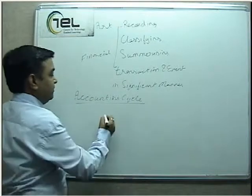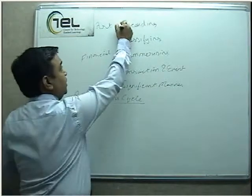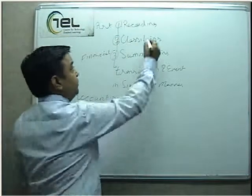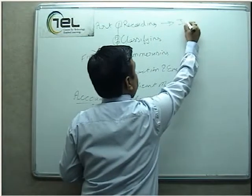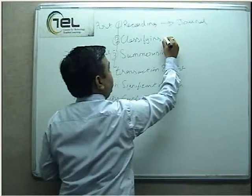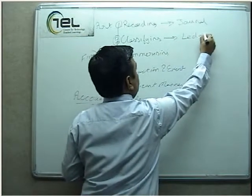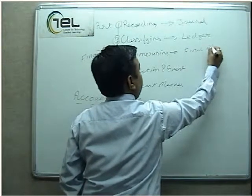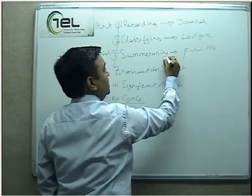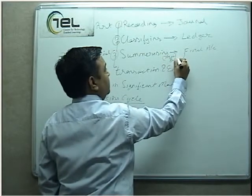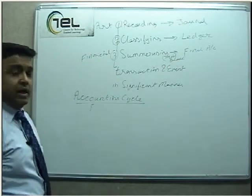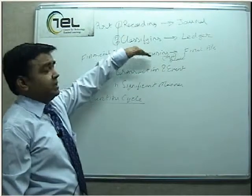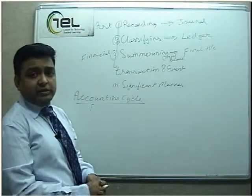The Accounting Cycle basically comes with three steps. The first one is Recording, the second is Classifying, and the third one is Summarizing. The book where we record the Accounts is called Journal. The book where we classify the Accounts is called Ledger. And the book where we summarize the Accounts is called Final Accounts. Before preparing Final Accounts, we also have to prepare a Trial Balance for checking the Mathematical Accuracy of the Accounts. Today in our lecture, we will be going through the first step, that is the Journal.